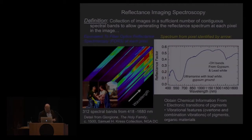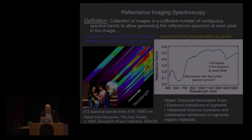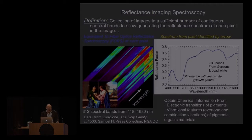Reflectance imaging spectroscopy is a very simple concept. In its formal definition, it's the collection of images in a sufficient number of contiguous spectral bands to allow generating the reflectance spectroscopy at each pixel in the image. We have a cube of many different images at different wavelengths — you pick one pixel, pull out the intensity variation across all wavelengths after calibration, and get the reflectance spectroscopy. From reflectance imaging, we don't get elemental information — we get molecular information: electronic transitions giving rise to color, and vibrational overtones and combinational bands associated with pigments and binding media.